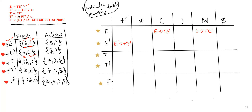Epsilon is placed using the follow set: plus, star, open bracket, close bracket, dollar. Epsilon is not in the first set, so we go to the follow set. We follow dollar and close bracket — those go to the second production. Epsilon is not yet in first, so we use follow.